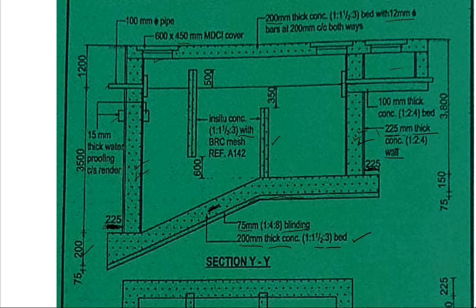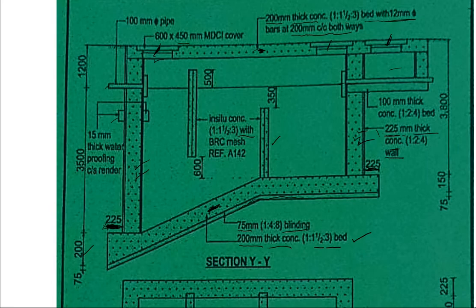Going up to the slab: the slab is 200 millimeters thick, concrete mix 1:1.5:3, with 12 millimeter bars at 200 millimeter centers. We have an opening here, an opening here, and an opening here — the opening is 600 by 450 millimeters with a medium duty cover.